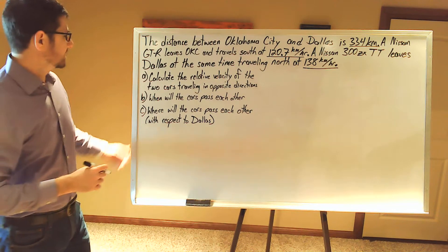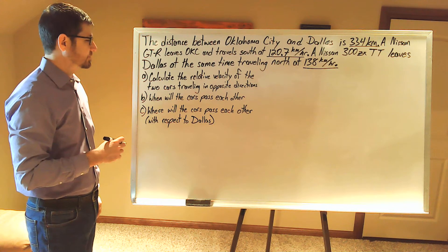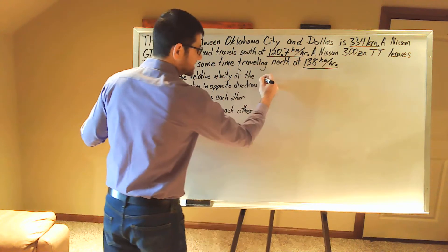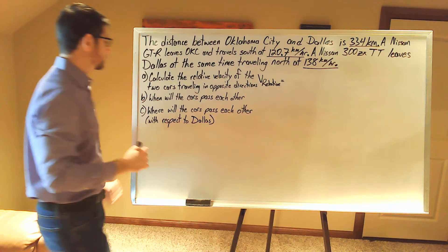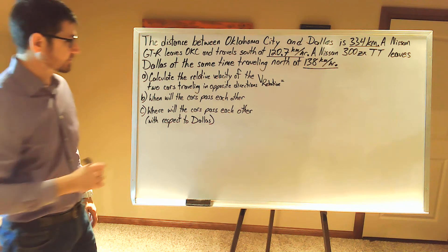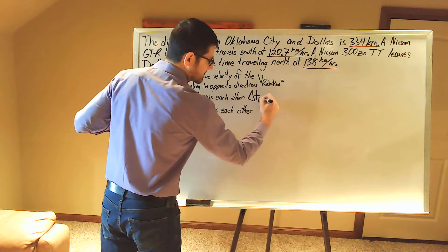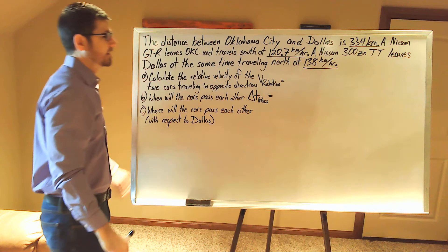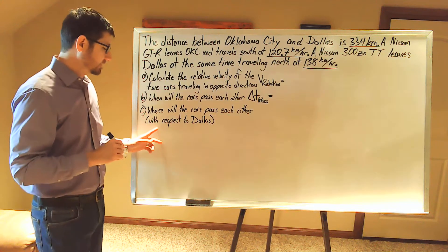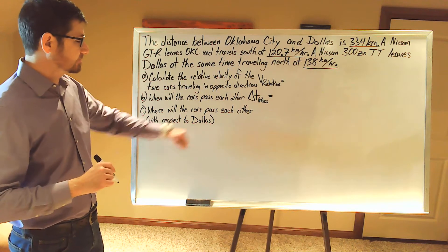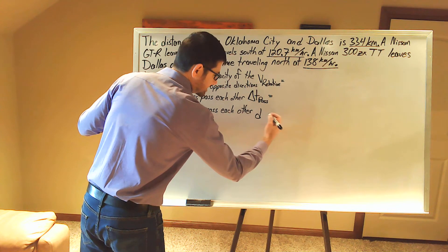This problem is wanting us to solve three different things. In part A, calculate the relative velocity of the two cars traveling in opposite directions — this is V subscript relative. In part B, when will the cars pass each other? This is the time interval, delta T subscript pass, describing at what time the cars pass. Part C, where will the cars pass each other? This is with respect to Dallas — north of Dallas.